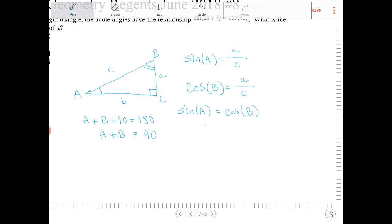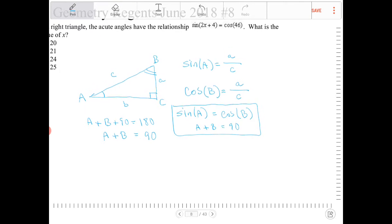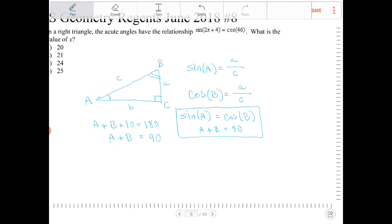So this identity, sine A equals cosine B, will hold true only if angle A and angle B add up to 90. This is the principle that this question is really asking for. This is what we refer to as an identity, and in particular, a co-trig identity.